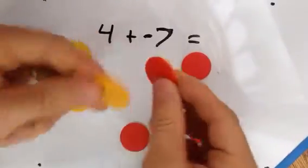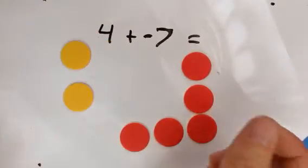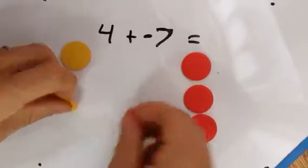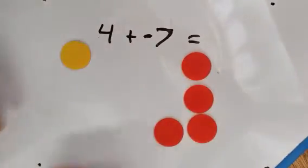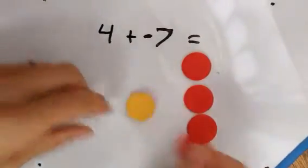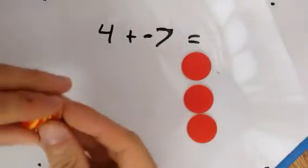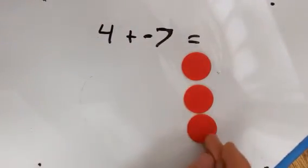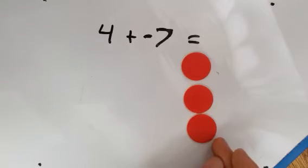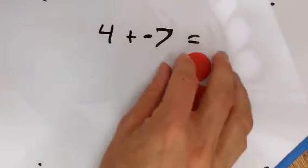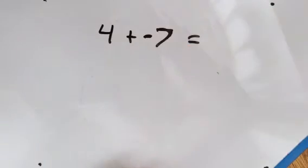And then likewise, these two are going to cancel each other, and these two are going to cancel each other, and these two are going to cancel each other. When all of these positives and negatives cancel each other out, we're left with a negative three. So four plus negative seven is going to be negative three.